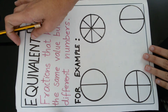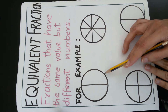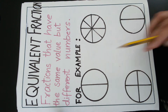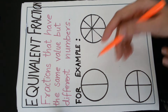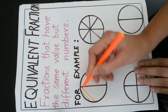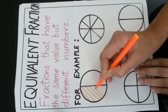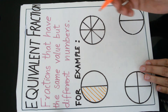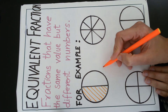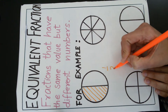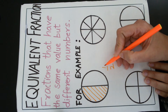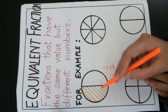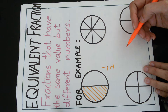We are going to learn this with the help of diagrams. Here we have a circle having two parts. If I shade one part of the circle and write this in the form of a fraction, I will represent it as 1 upon 2. Numerator 1 shows the shaded region, and denominator 2 shows the total number of parts in the circle.